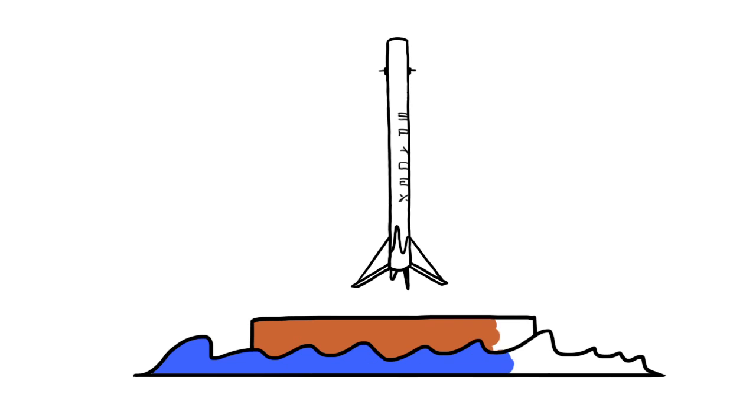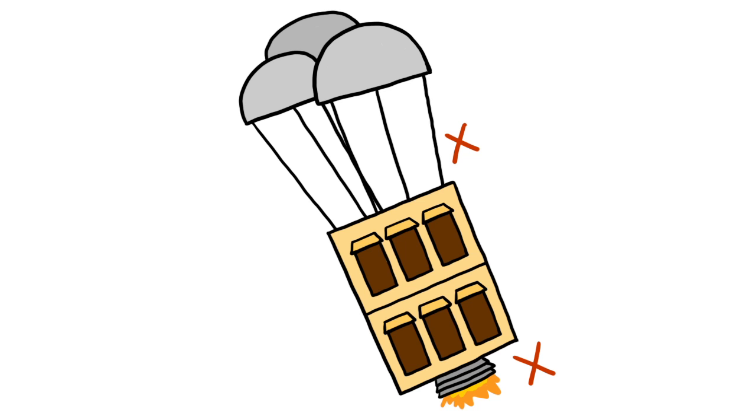Yet, with SpaceX's Falcon 9 rocket making the very first unmanned and vertical landing in late December 2015, it looks like this problem may not be a problem for long.